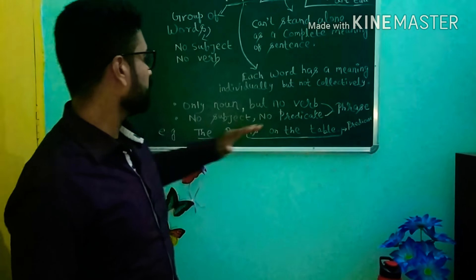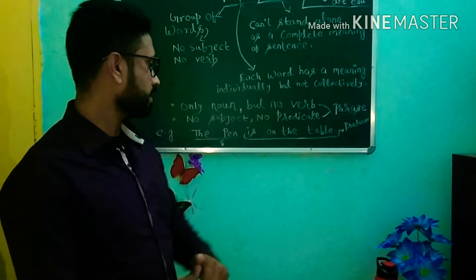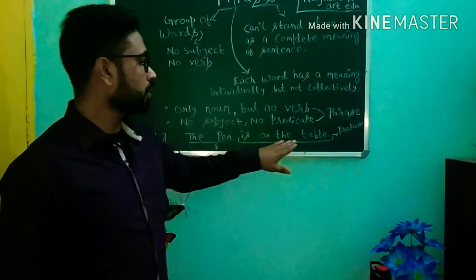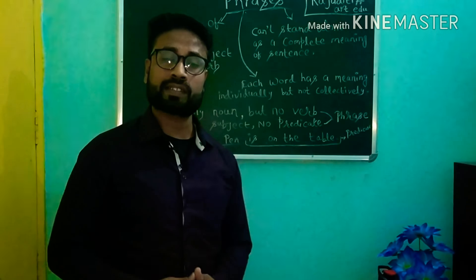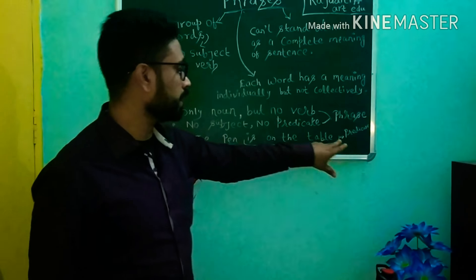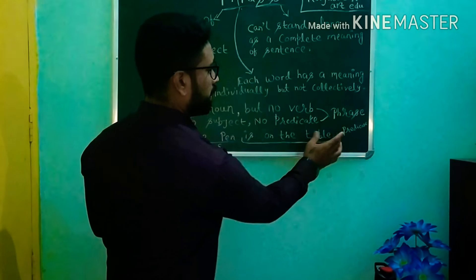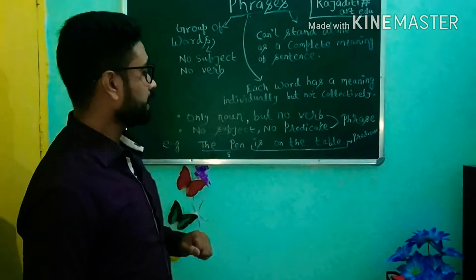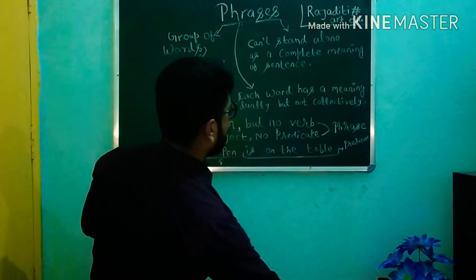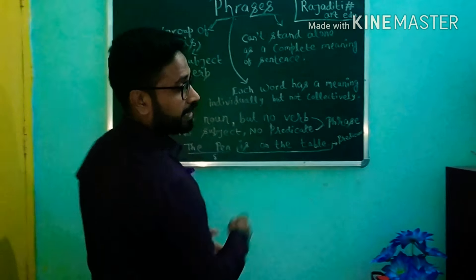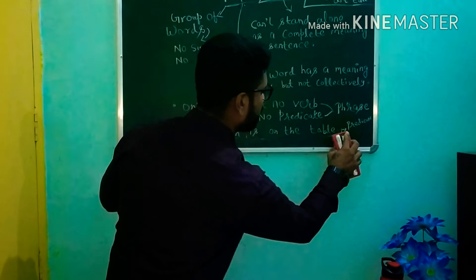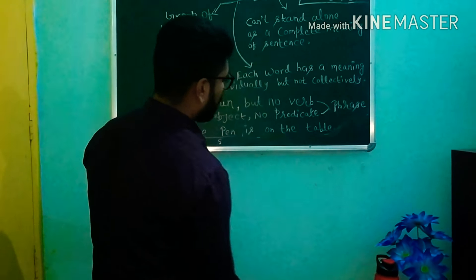We can say that a phrase lacks subject and predicate. Let's clarify by going through an example: 'The pen is on the table.' As we have learned in the previous lesson on predicate, 'the pen' will be the subject for this sentence, and 'is on the table' will be the predicate for this particular sentence.